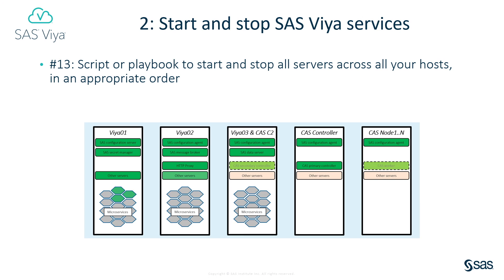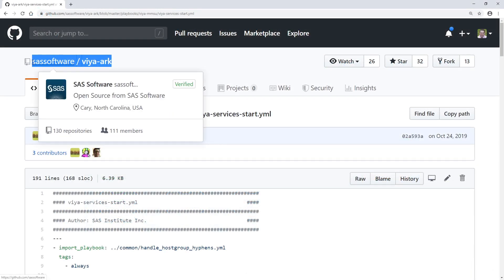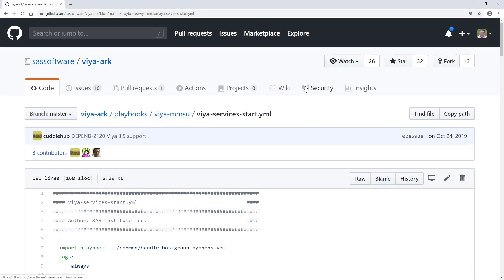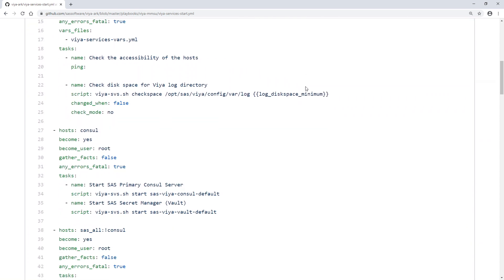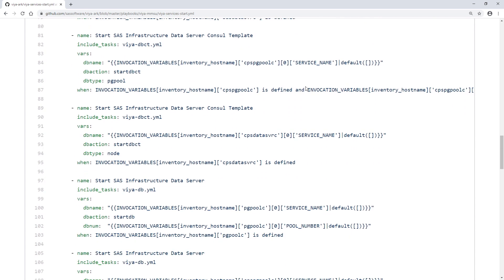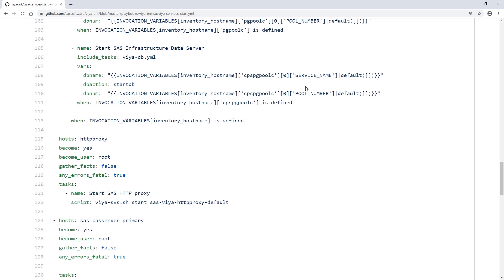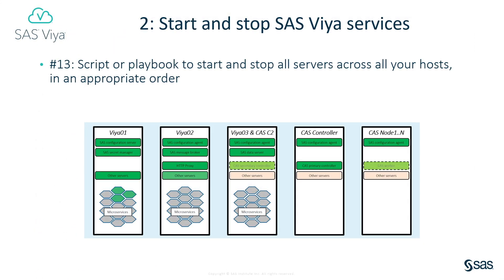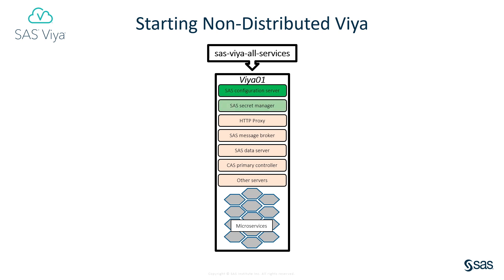Number 2: Start and stop SAS Viya Services. If you have a multi-machine SAS Viya deployment, task 13 of the checklist is essential. It shows you where to find the multi-machine services utilities playbooks in the SAS Viya Administration Resource Kit, or SAS Viya Arc, on GitHub. These Ansible playbooks are fully working examples which coordinate the startup and shut down of your SAS Viya Services in the right sequence across multiple hosts. When all the SAS Viya components are deployed on a single host in a non-distributed way, then the SAS Viya All Services script can take care of starting and stopping those services perfectly well.